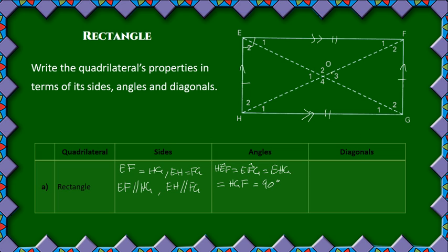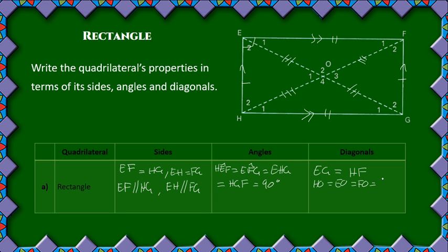And then finally for the diagonals of the rectangle: all diagonals bisect each other and they are all equal to each other. So EG is equal to HF, and then also the smaller segments: HO is equal to EO is equal to FO is equal to GO.